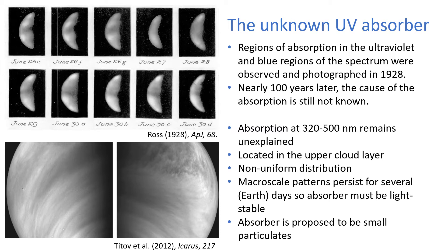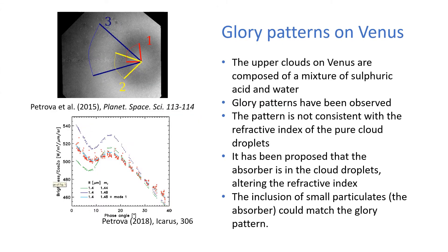As well as being able to see the absorption, we also detect these glory patterns — rings of bright and dark and then bright again that you can see up here. These glories are formed exclusively by spherical droplets, so the cloud droplets.